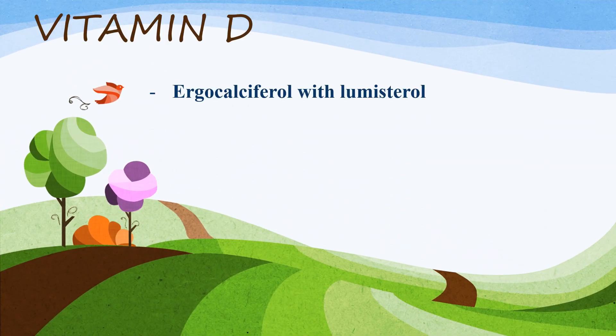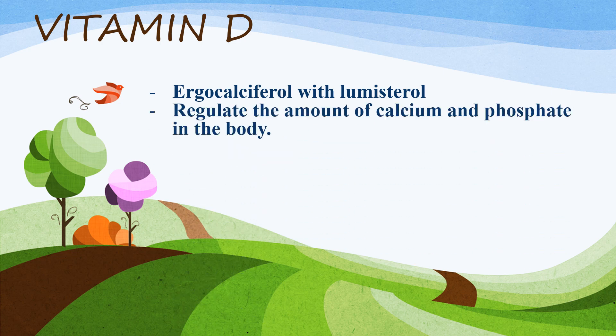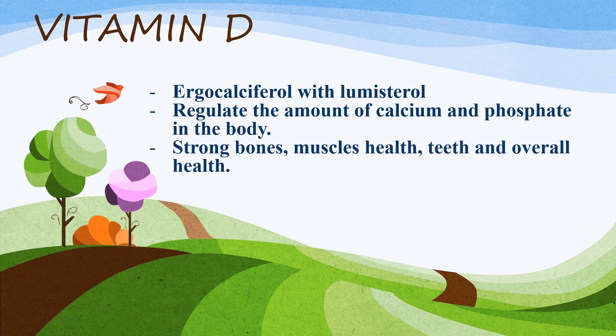Vitamin D is a mixture of ergocalciferol with lumisterol in a 1:1 ratio. Its divisions are D2 (ergocalciferol), D3 (cholecalciferol), D4 (2,2-dihydroergocalciferol), and D5 (sitocalciferol). Vitamin D helps to regulate the amount of calcium and phosphate in the body, also called the anti-rachitic factor. It is important for strong bones, muscles, teeth, and overall health.